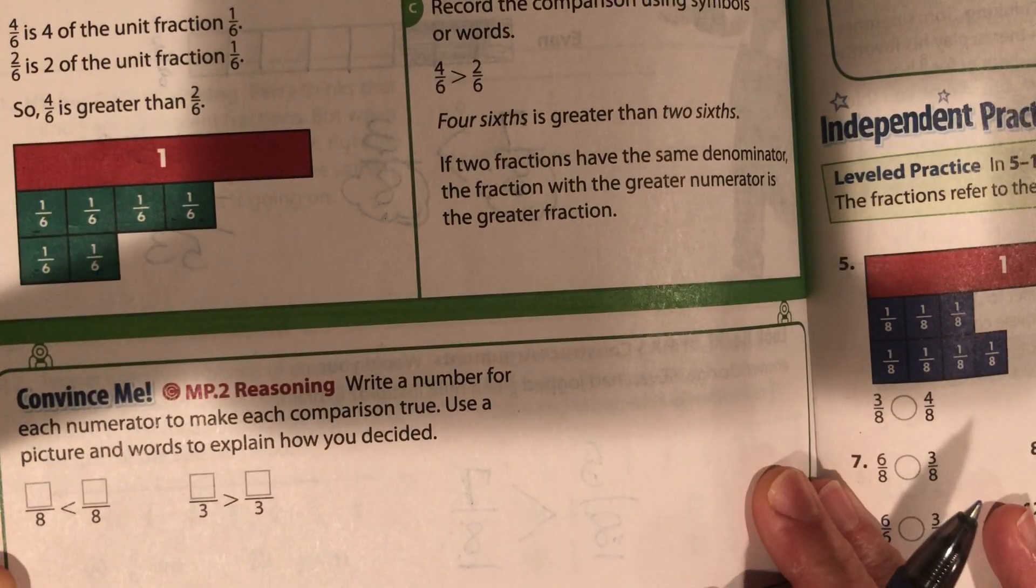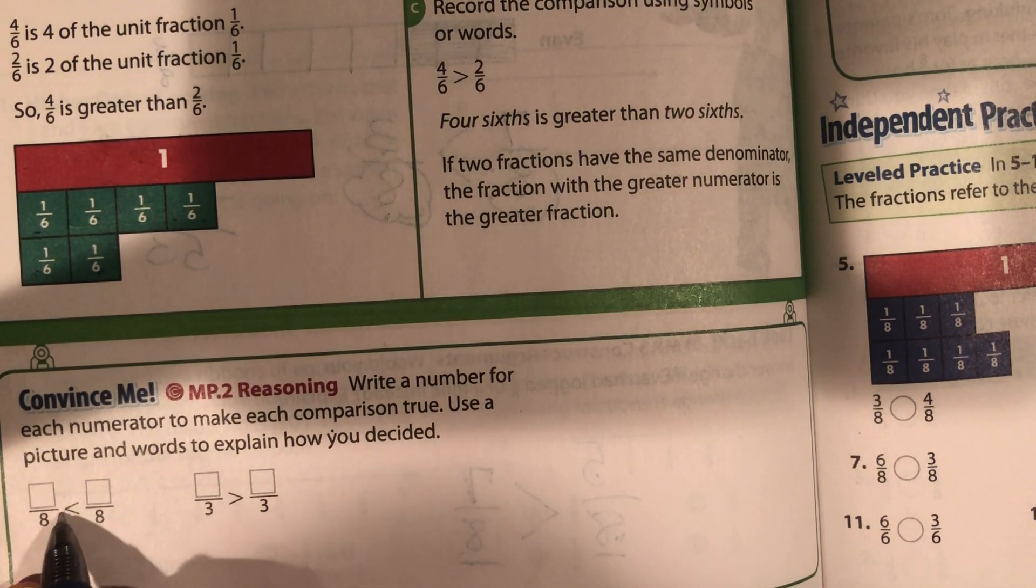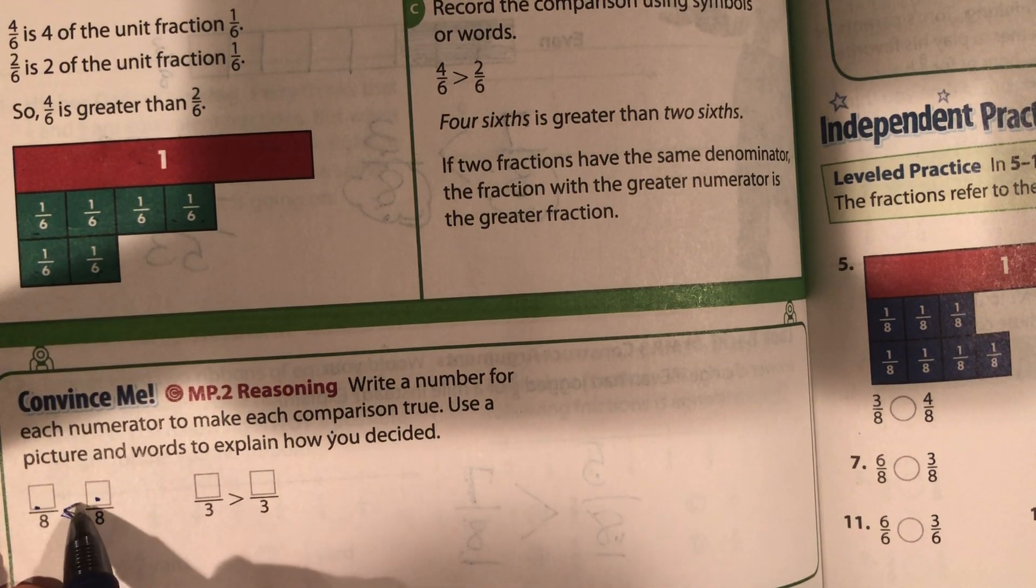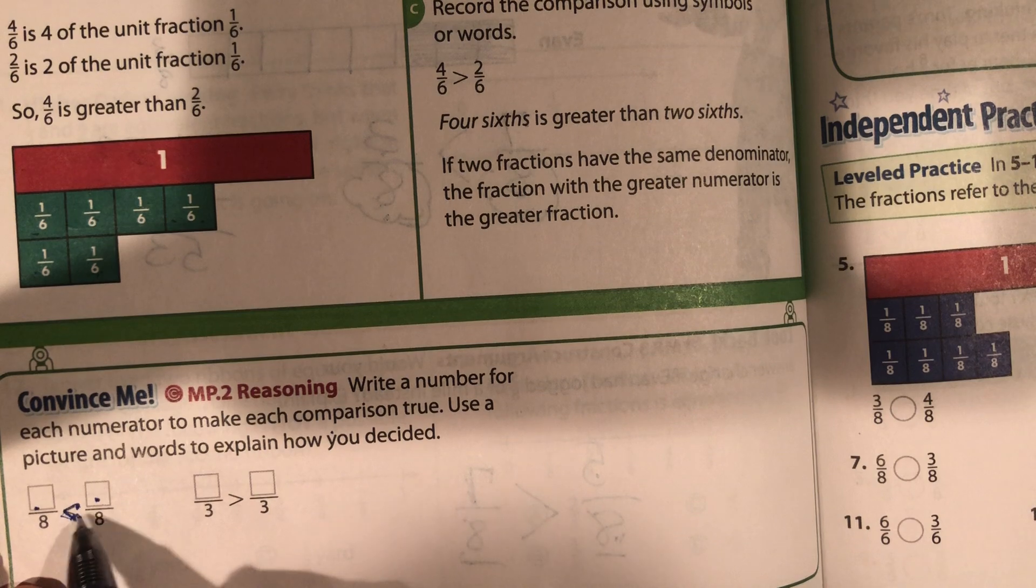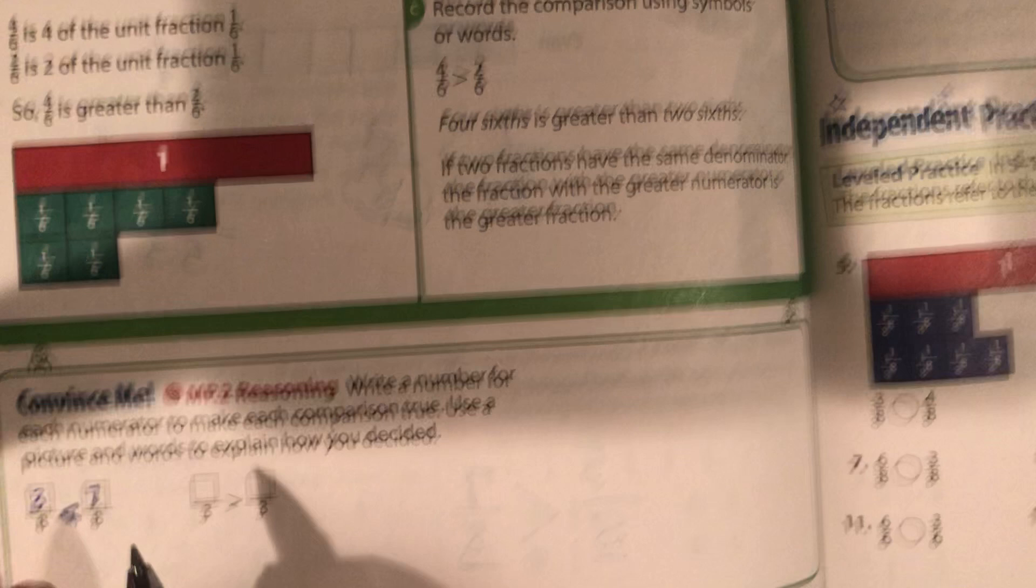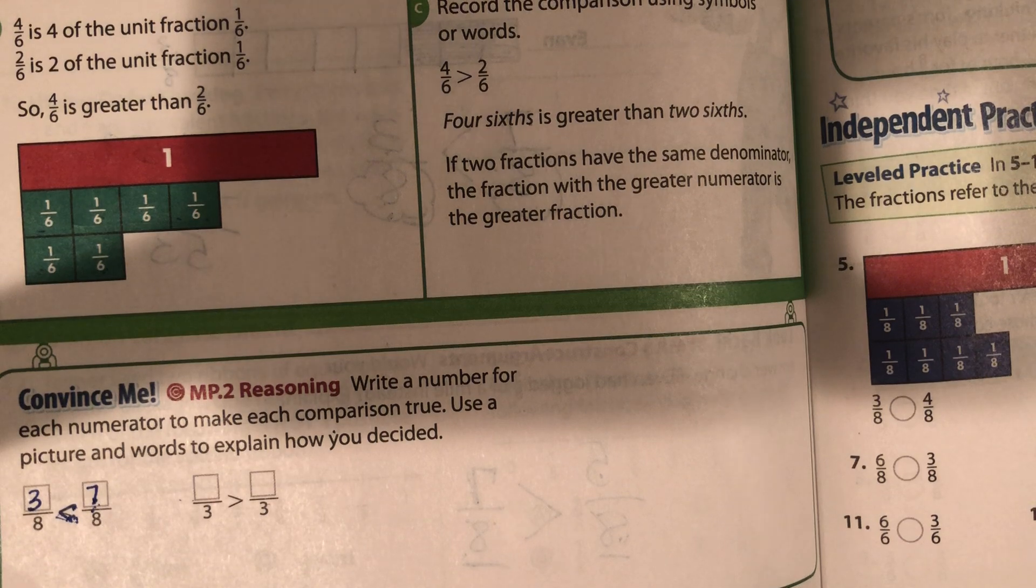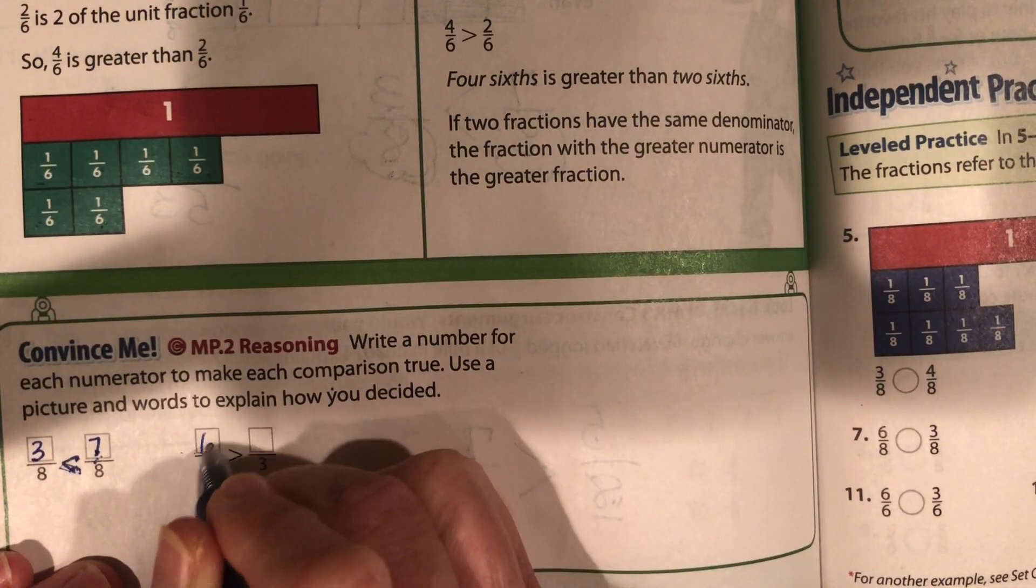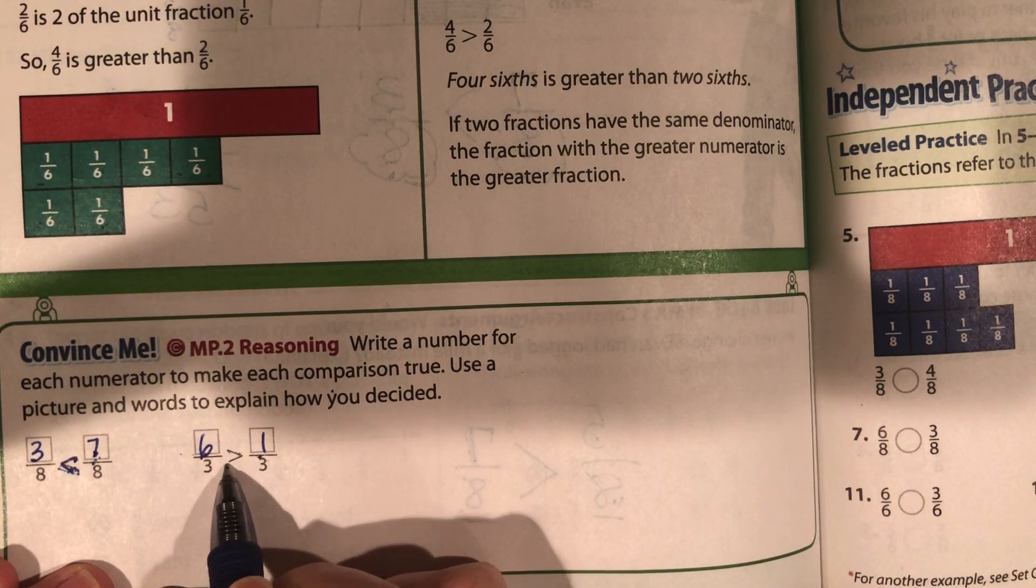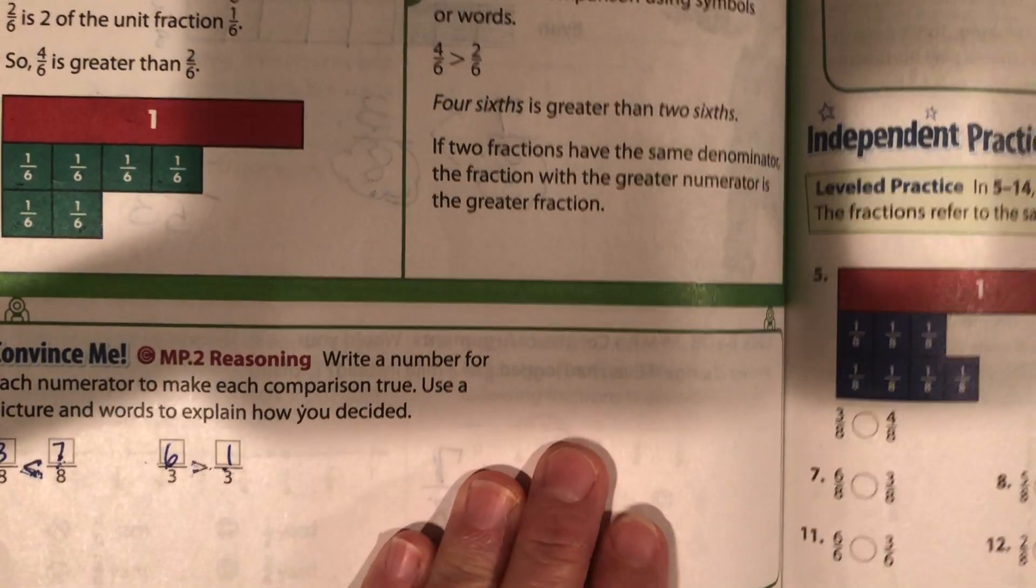Write a number for each numerator to make each comparison true. Now they're already giving you, this is less than, so this number needs to be smaller than this number. Remember, this has like teeth and it's going to eat the big number. So you could put like seven over here and three over here. It doesn't matter as long as this number is bigger. Now pause it and do that one.